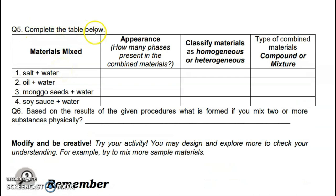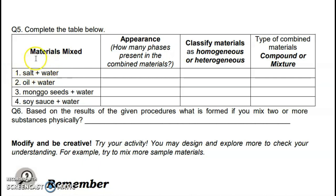Q5: Complete the table below. You have your mixed materials — salt plus water, oil plus water, mongo seeds plus water, soy sauce plus water. Write the appearance: how many phases are present in the combined materials — solid, liquid, or gas? How many phases do you see? Classify the materials as homogeneous (uniform) or heterogeneous (non-uniform) mixture. Then identify the type of combined materials: is it a compound or a mixture?